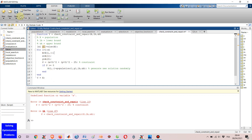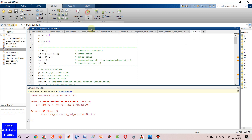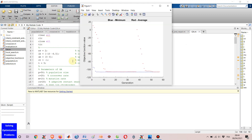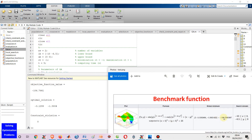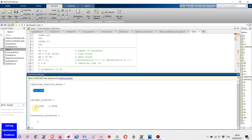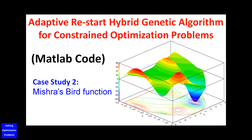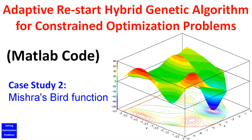Hello everyone! Let's see how my Adaptive Restart Hybrid Genetic Algorithm for Constrained Optimization Problems works. I'm going to show you my innovative version of Genetic Algorithm, called Adaptive Restart Hybrid Genetic Algorithm for Constrained Optimization Problems in MATLAB. This innovative genetic algorithm is much more powerful than the traditional genetic algorithm because of the restart mechanism and the local search.